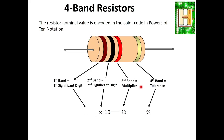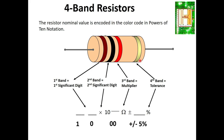Now let's look at the four-band resistor. In a four color band resistor: the first band gives the first significant digit, the second band gives the second significant digit, the third band is the multiplier, and the fourth is the tolerance. For example: brown (1), black (0), then multiplier 10² (two zeros), and gold which is ±5% tolerance — giving 1 kilohm at ±5%.